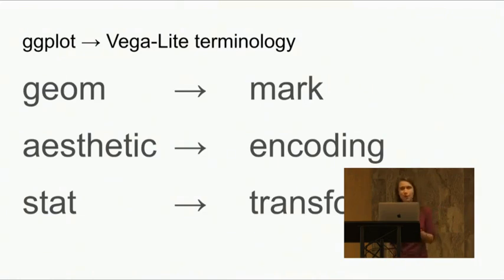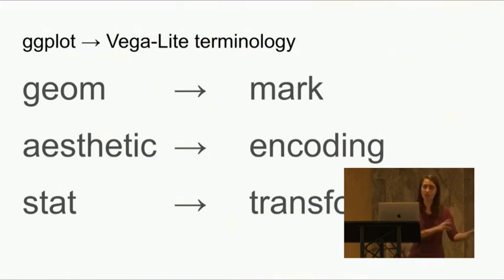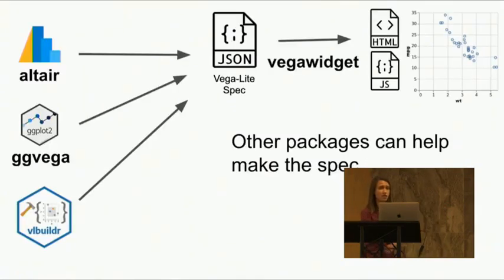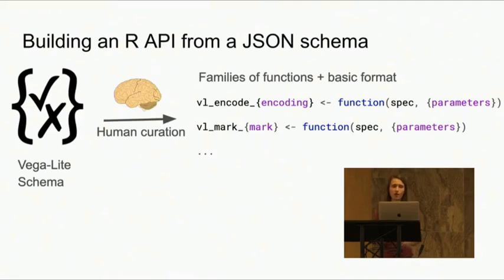Much more of you are familiar with ggplot. In ggplot, where you talk about a geom, that's a mark in ggvega — a package to take a ggplot object and geom. So you'd say vlmark point, vlmark bar.